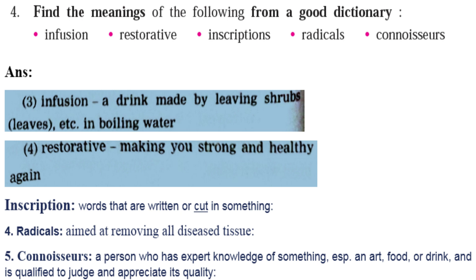Dictionary meanings: 'Infusion' — a drink made by leaving shrub leaves in boiling water. 'Restorative' — making you strong and healthy again. 'Inscription' — words that are written or cut into something. 'Radicals' — aimed at removing all disease tissues. 'Connoisseurs' — a person who has expert knowledge of something, especially an art, food, or drink, and is qualified to judge and appreciate its qualities.